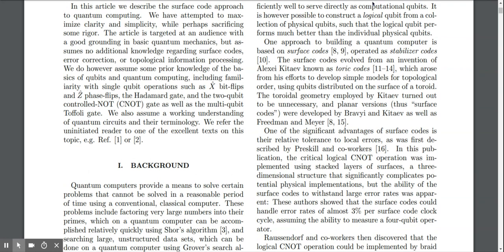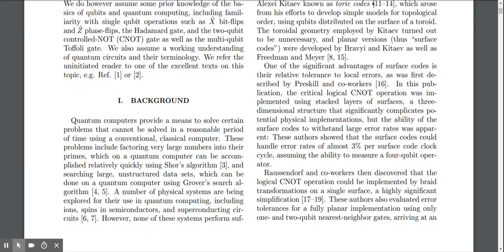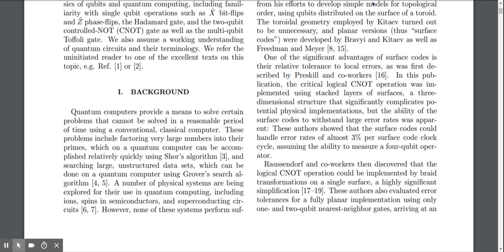One approach to building a quantum computer is based on surface codes operated as stabilizer codes. The surface codes evolved from an invention of Alexei Kitaev known as toric codes. In this publication, the critical logical CNOT operation was implemented using stacked layers of surfaces, a three-dimensional structure that significantly complicates potential physical implementations.